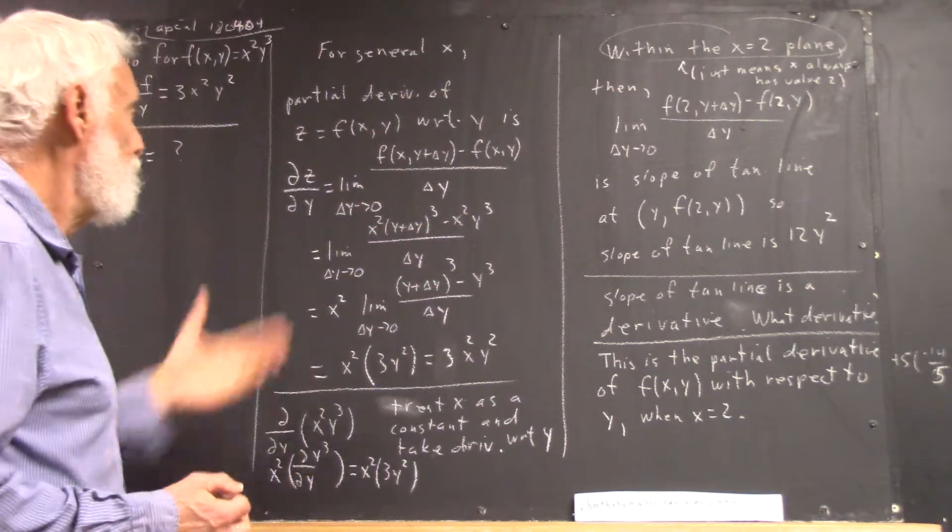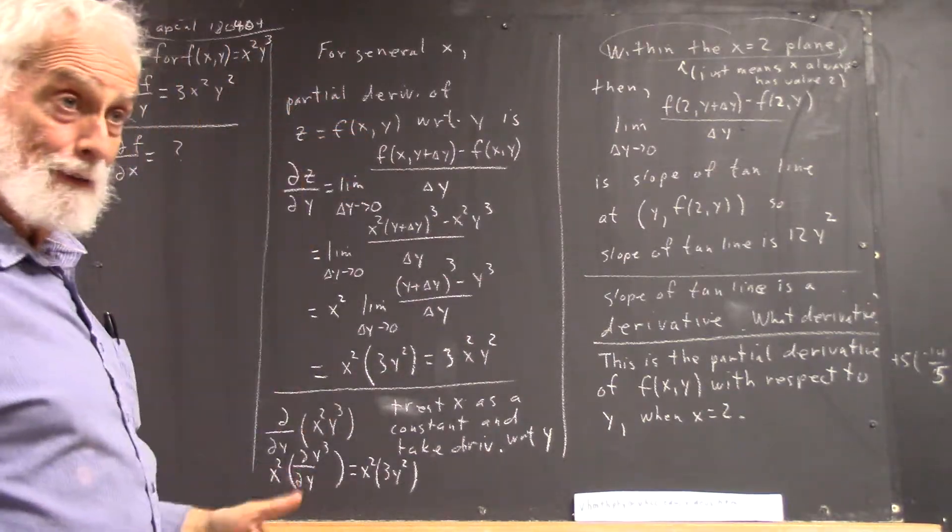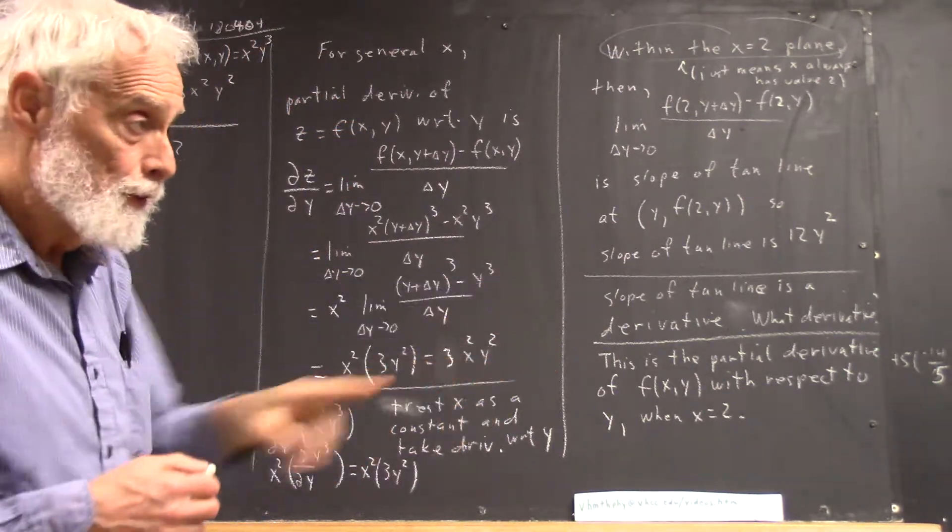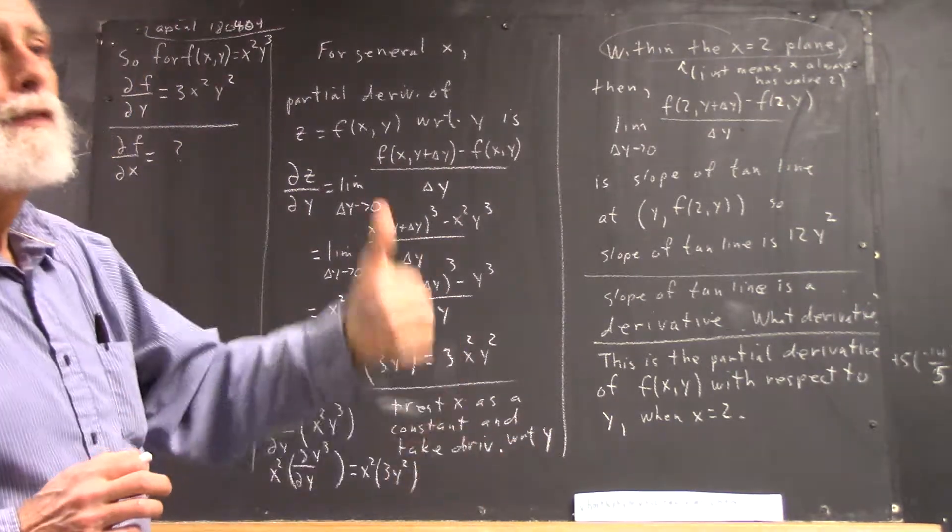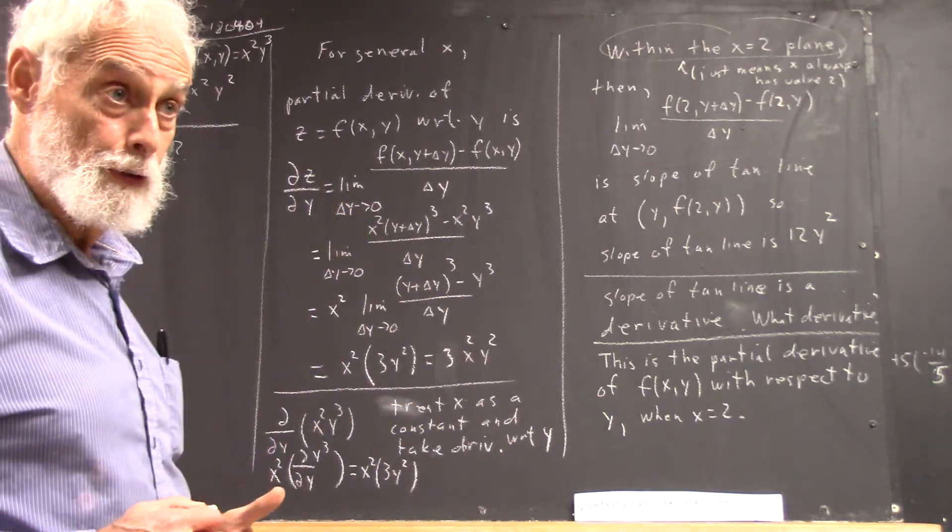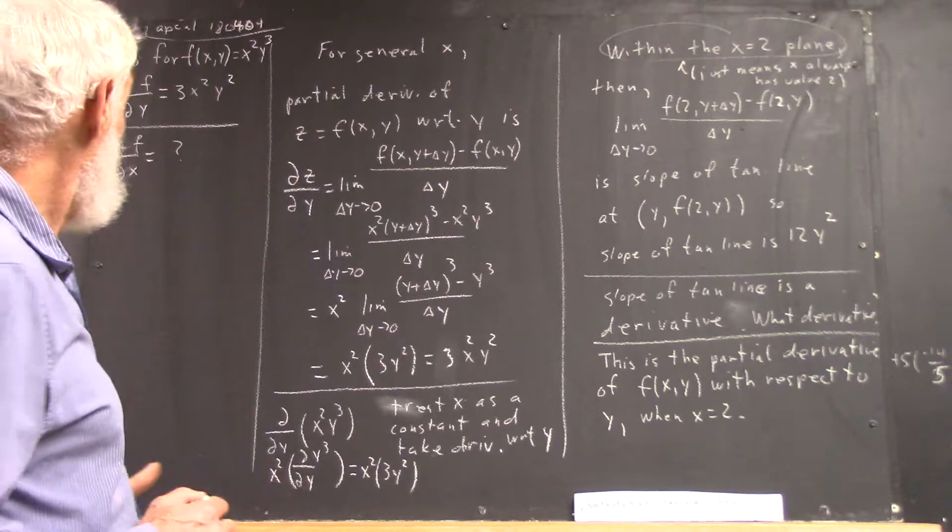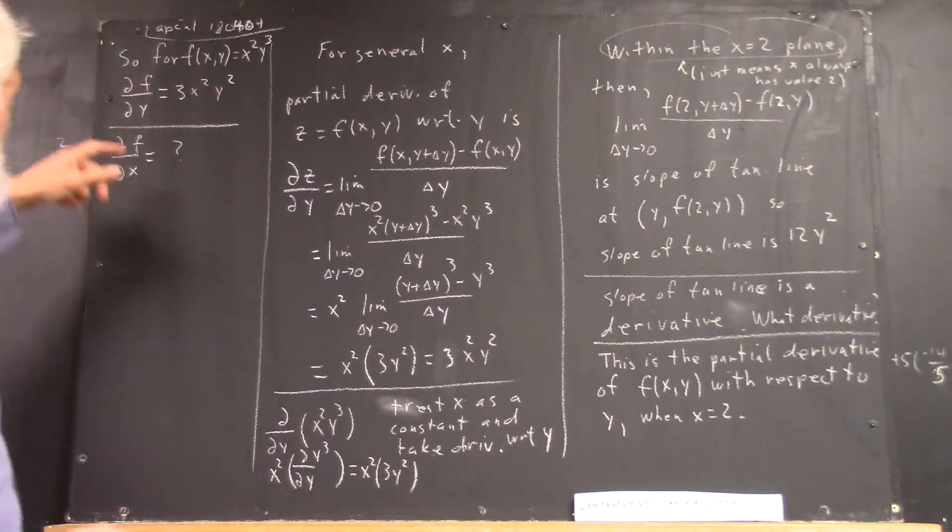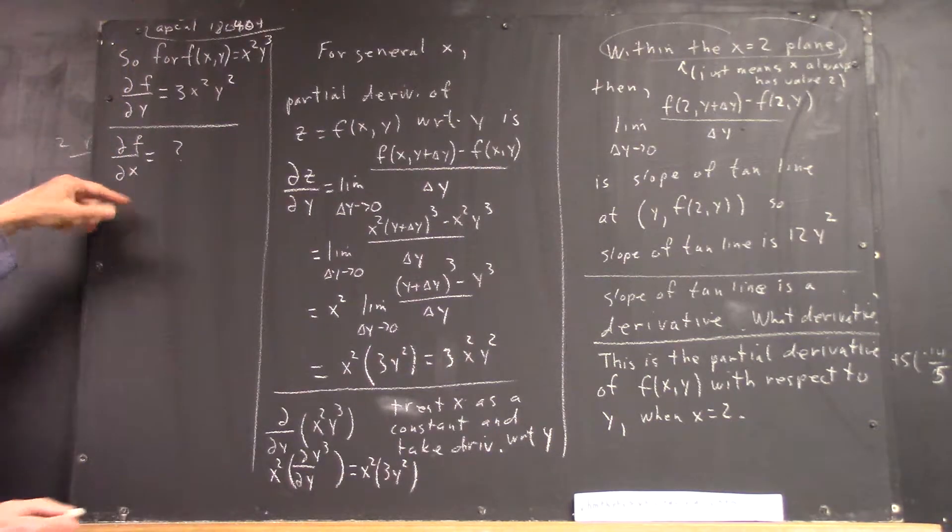Because what we do here is we hold x constant and we change y. So we see if we're moving in the x direction how fast the value of the function changes. So if we want the partial with respect to x, we hold y constant.